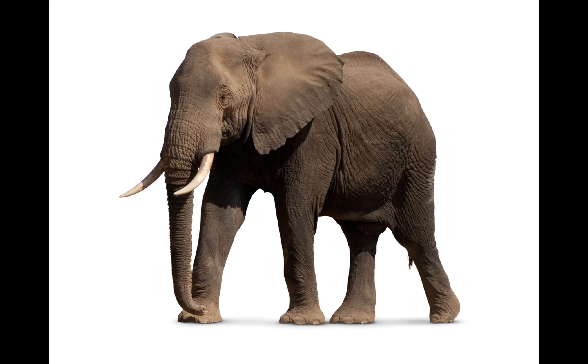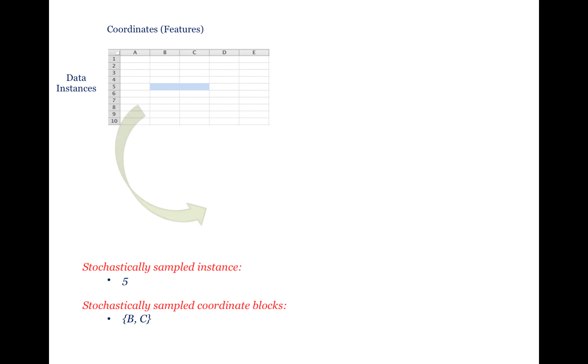So you may ask, for big data, why do we prefer stochastic block coordinate descent? To answer this question, consider this dataset where each row represents a single data instance with columns representing different coordinates or features. At each step of stochastic block coordinate descent, both a single data instance and coordinate blocks are stochastically sampled. Then, the gradient computation required by optimization is based on this small amount of stochastically sampled data instances and coordinates.